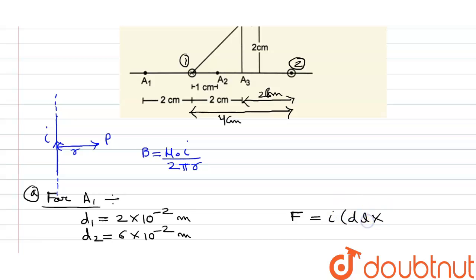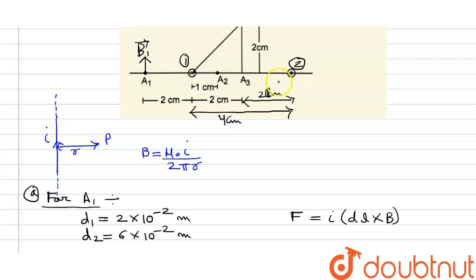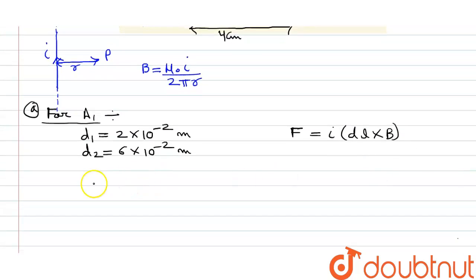We need to find the direction of the magnetic field at point a1. Due to wire number one, applying the right-hand thumb rule gives us the magnetic field B1 in the upward direction. Due to wire number two, for which current is coming out of the plane, the magnetic field direction will be in the opposite direction.